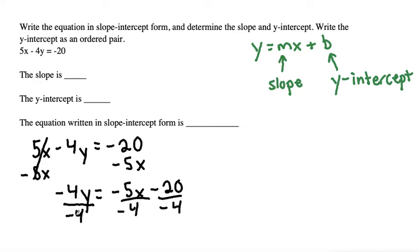So negative 4 divided by negative 4 cancels out and goes to 1, leaving us with just y. We don't have to write the 1 coefficient. A negative 5 divided by negative 4 is positive, and we'll leave it as 5 over 4 because we can't reduce that, so it's 5 over 4x. And again, a negative divided by a negative is positive—negative 20 divided by 4 is 5.